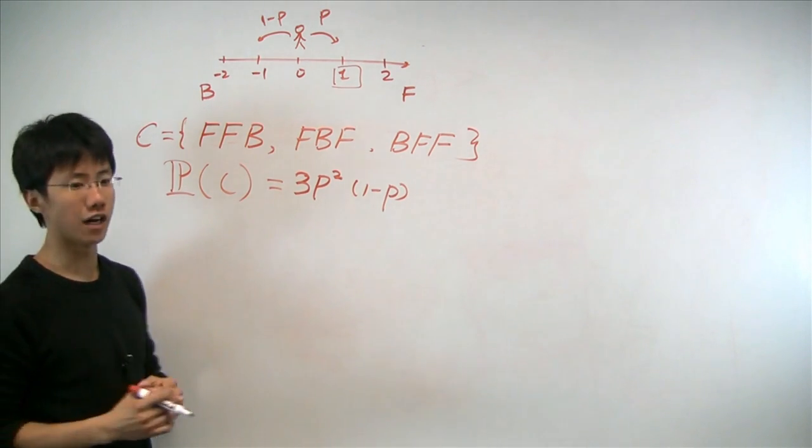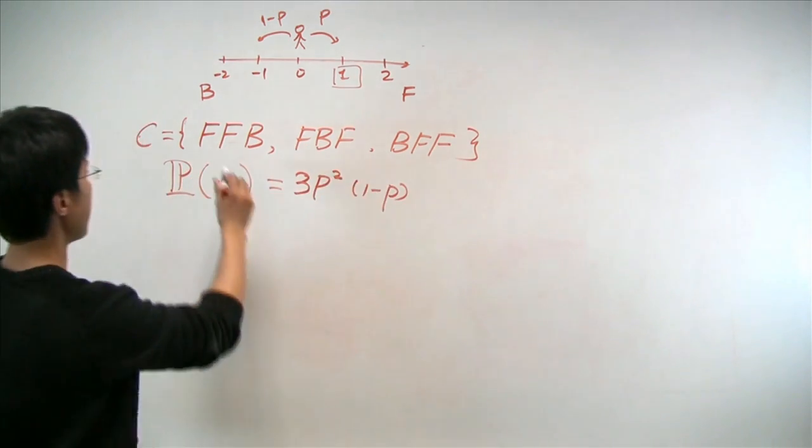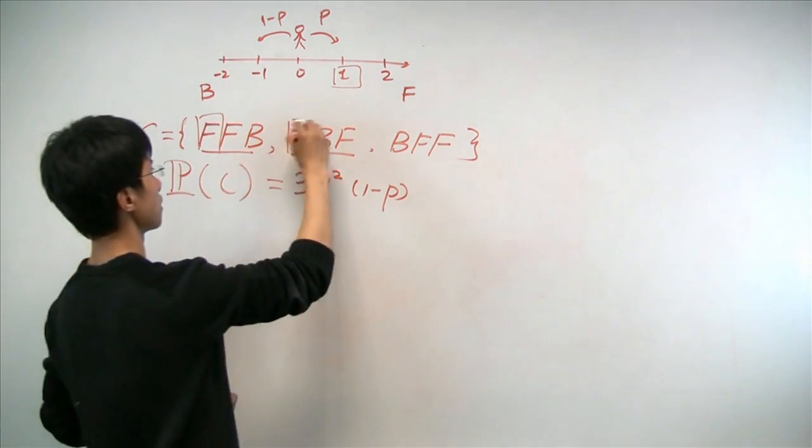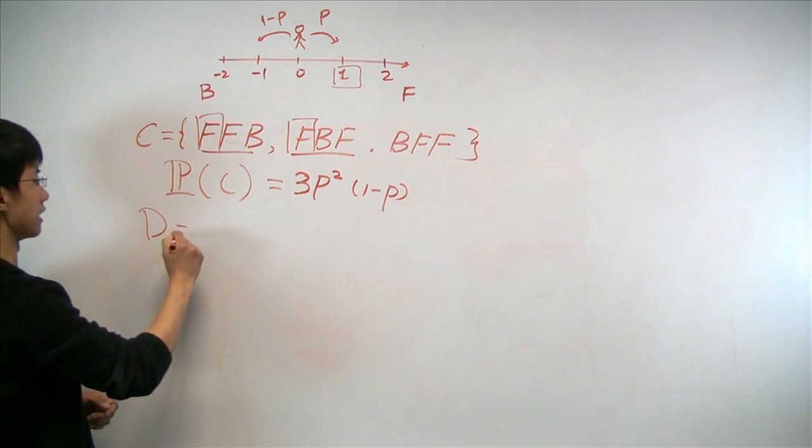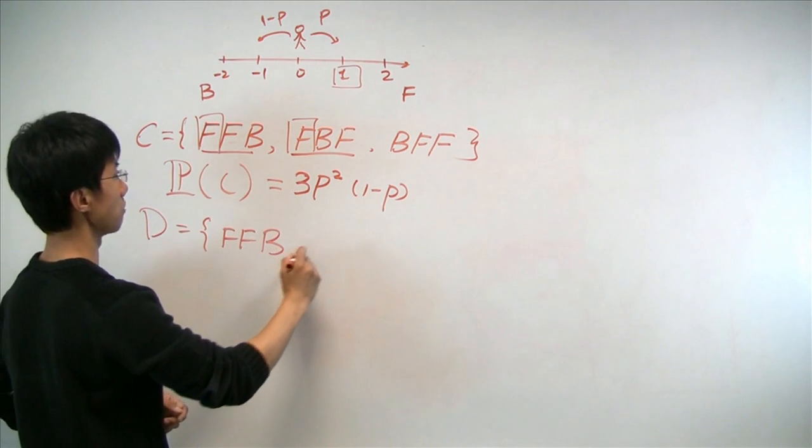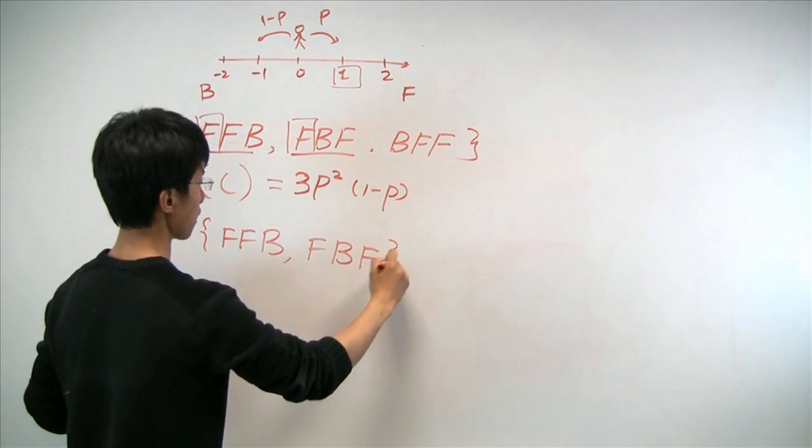Without going into the details, let's take a look at the C, in which we have three elements, and only the first two elements correspond to a forward step in the first step. So we can define event D as simply the first two outcomes, forward, forward, backward, and forward, backward, forward.